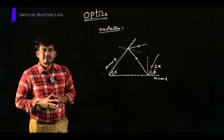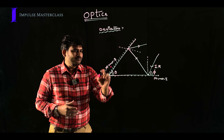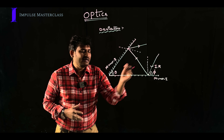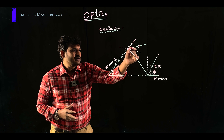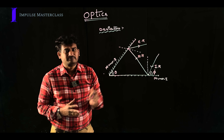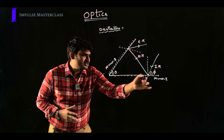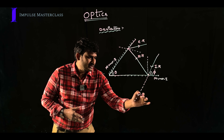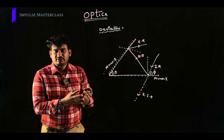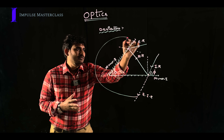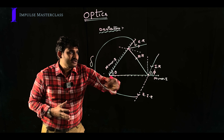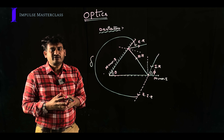Now let us understand how to calculate the deviation due to two plane mirrors. Plane mirror 1 and plane mirror 2 are at angle theta between them. The incident ray falls on mirror 1 at angle i₁, reflects onto mirror 2, and then reflects as the emergent ray. If we extend the incident ray, it forms the extended incident ray. The total angle by which the emergent ray deviates from this extended ray — from here to here in the clockwise direction — is called the total deviation.